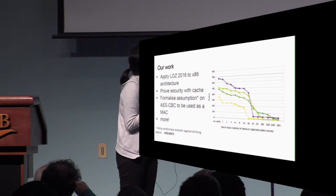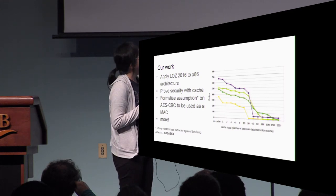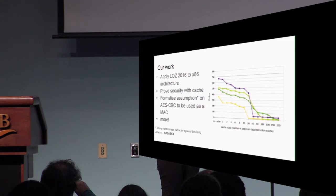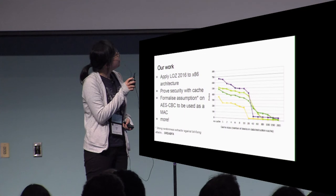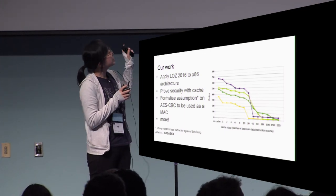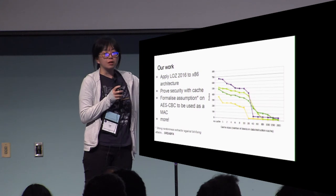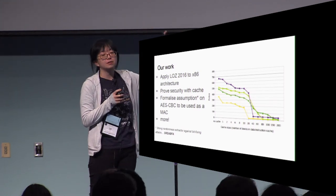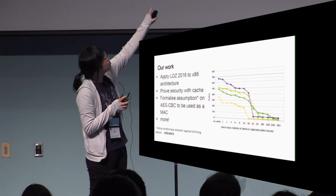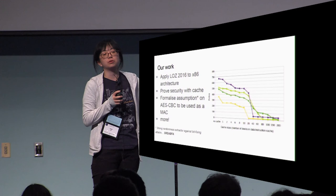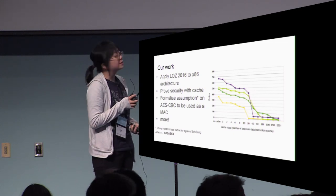This picture here is basically our benchmark. As you can see — the words might be a little small — the x-axis is the cache size. As cache size grows larger, the performance overhead of this protection actually drops down, getting very close to the original program. And that's it. Thank you.